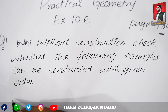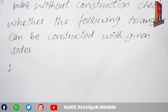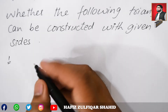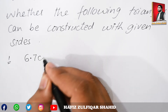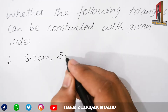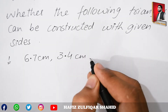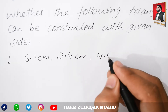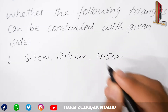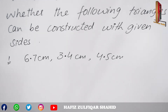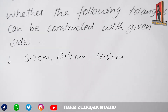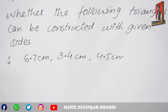Question No. 1 has values: 6.7 cm, 3.4 cm. These are the values which we have to check for the triangle. We have to check if we can draw this triangle with these measurements. This is our method.